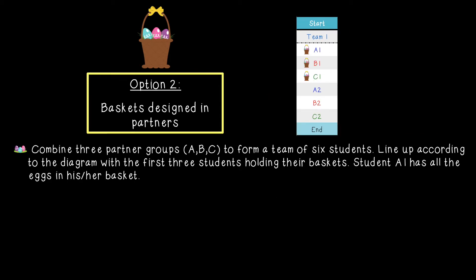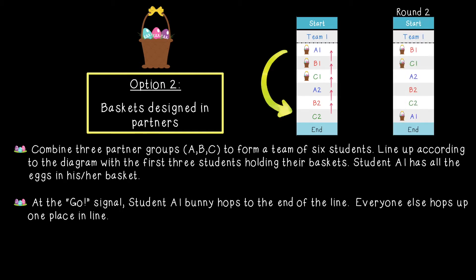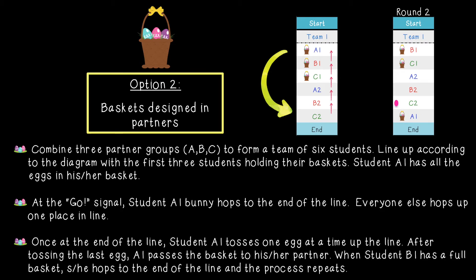Option two: baskets designed in partners. Combine three partner groups — A, B, and C — to form a team of six students, lined up according to the diagram with the first three students holding their baskets. Student A1 has all the eggs. At the go signal, A1 bunny hops to the end of the line and everyone else hops up one place. A1 then tosses one egg at a time up the line, then passes the basket to his or her partner. When student B1 has a full basket, he or she hops to the end and the process repeats until all team members have hopped the course, and all eggs are returned to the basket at the front.